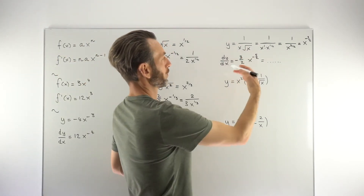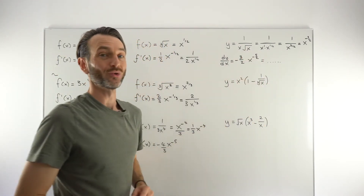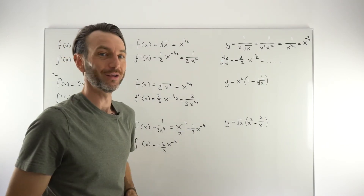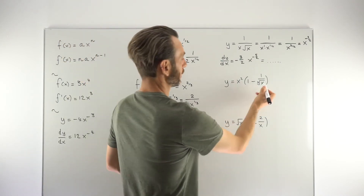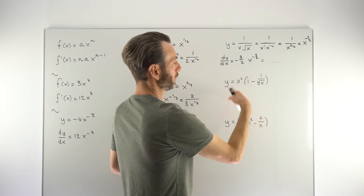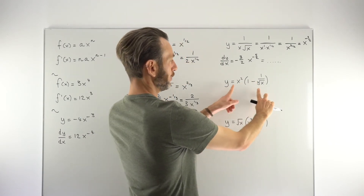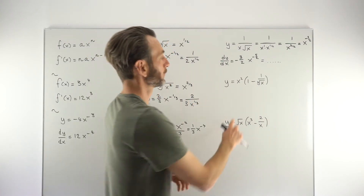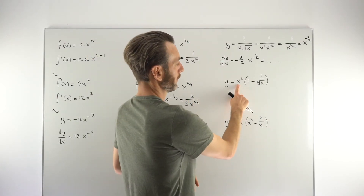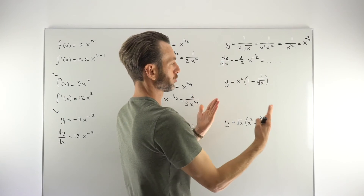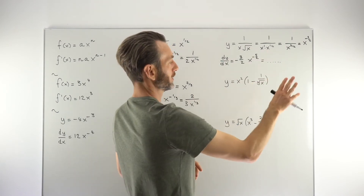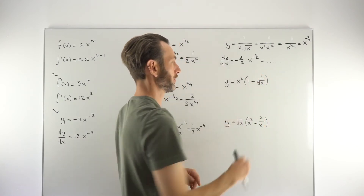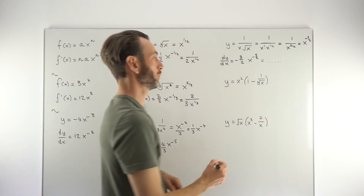That's another common form where you've got multiple pieces of exponent work to do before you can even use the power rule. Let's look at the next one — slightly different. We've got a bracket, which we need to get rid of because it's essentially a product of functions. We've also got a fourth root on the bottom of a fraction.